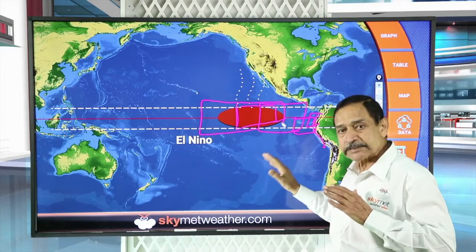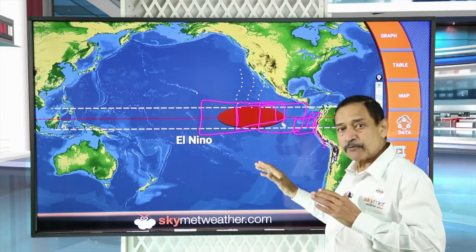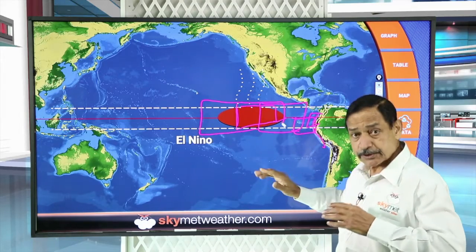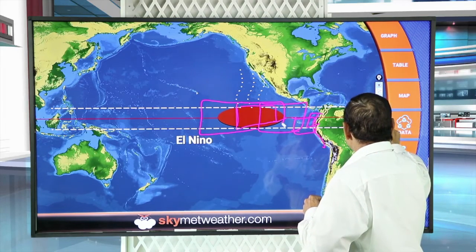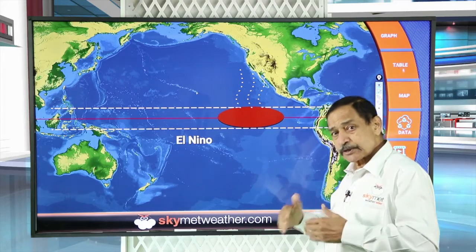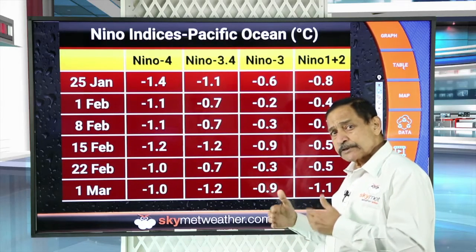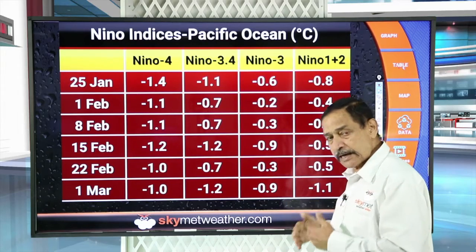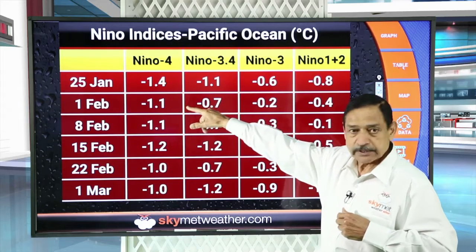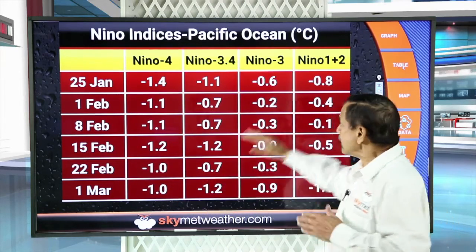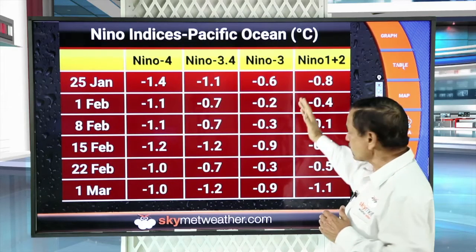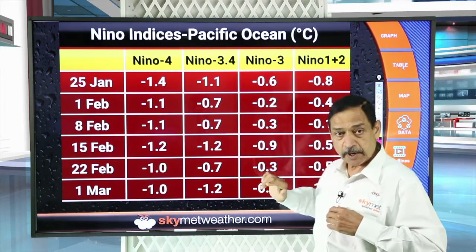That means the central parts of the Pacific form the Nino 3.4 region, which is the principal measure for predicting the monsoon. We also have a table for the four Nino indices, measured every week, averaged out over a month and over three months for quarterly values. I have given six weekly values starting from 25th January up to 1st March, the latest value. The eastern parts — Nino 1+2 and Nino 3, closer to the South American coast — are a little warmer than the western and central parts.